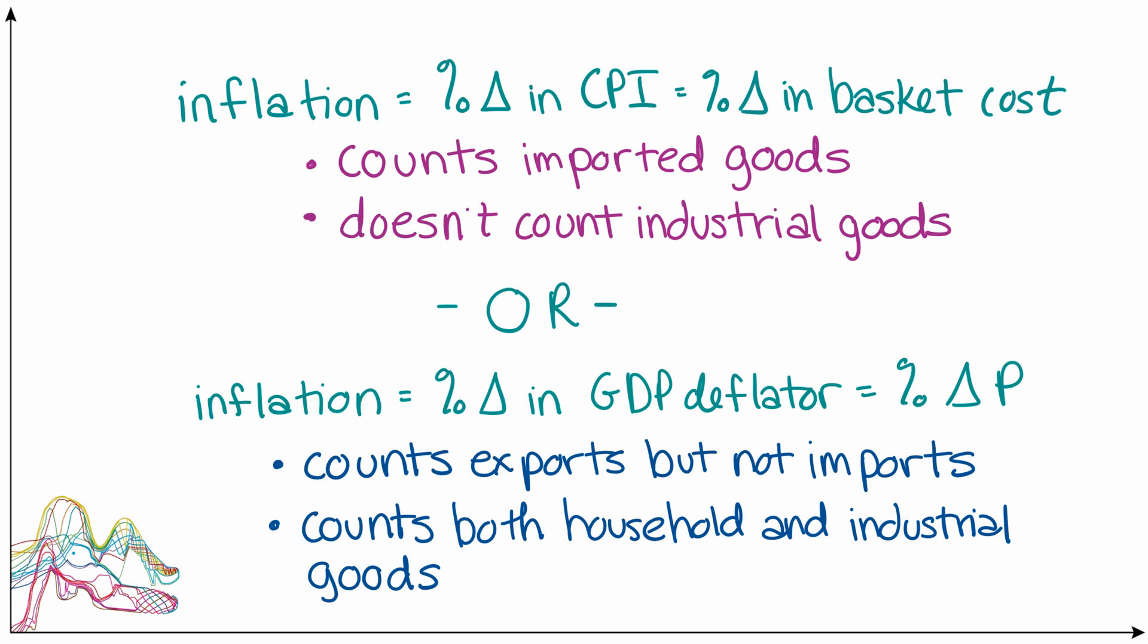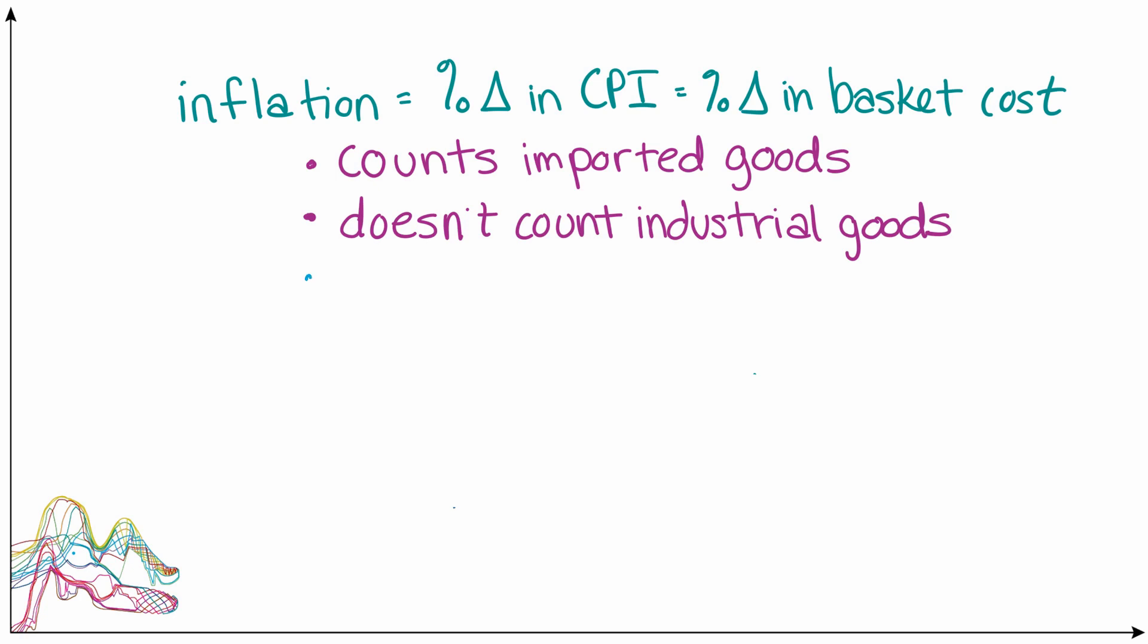Now that we understand the conceptual differences between these two measures of inflation, we can think about in what circumstances each one is most appropriate. Because inflation calculated using the consumer price index specifically measures the prices of things that households typically consume, this is a helpful measure of inflation because it represents changes in just the cost of living in an economy. Granted, this is somewhat of an imperfect measure of changes in cost of living, mainly because we assume that the basket of goods and services that households consume is constant over time and doesn't respond to price changes in the economy. Whereas in reality, households probably optimize and substitute away from items that got relatively more expensive and substitute towards items that got relatively cheaper.